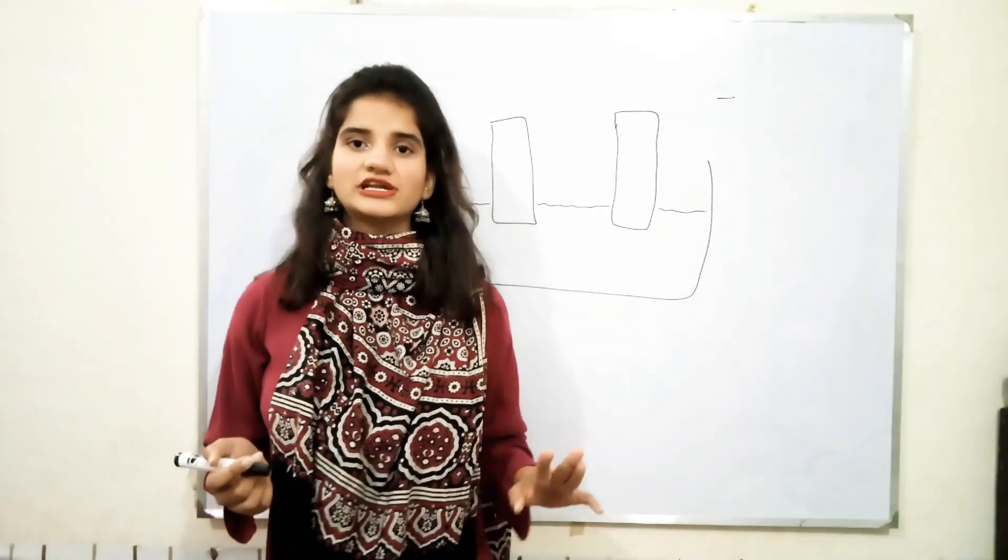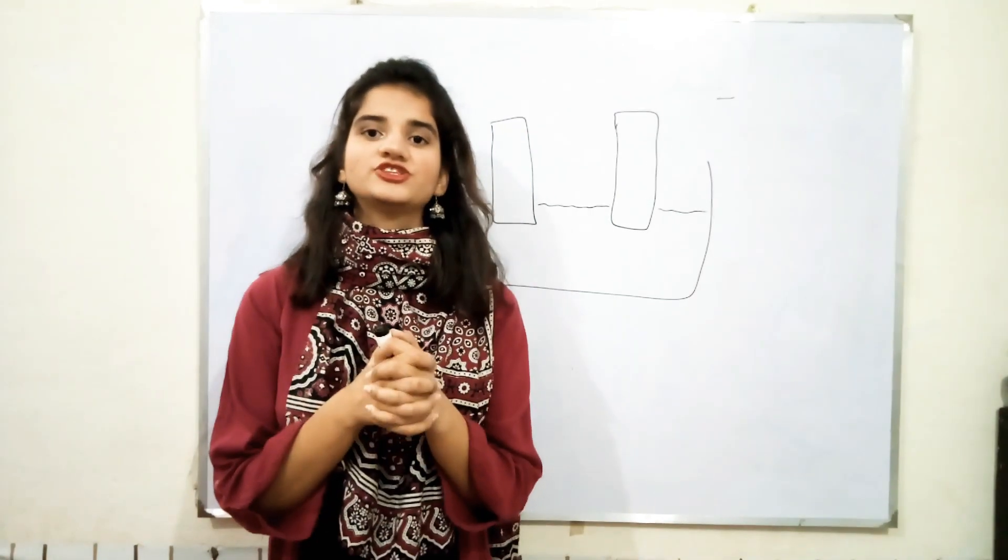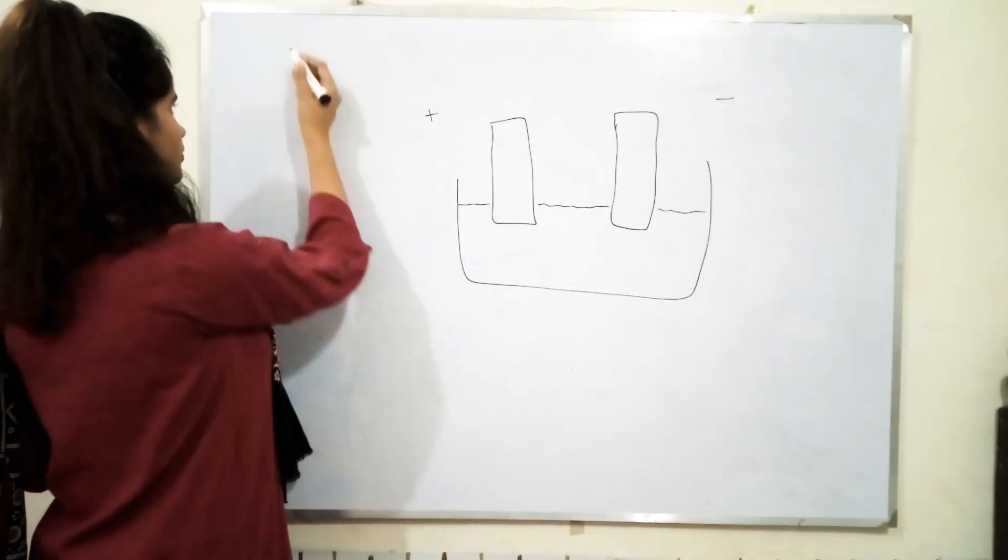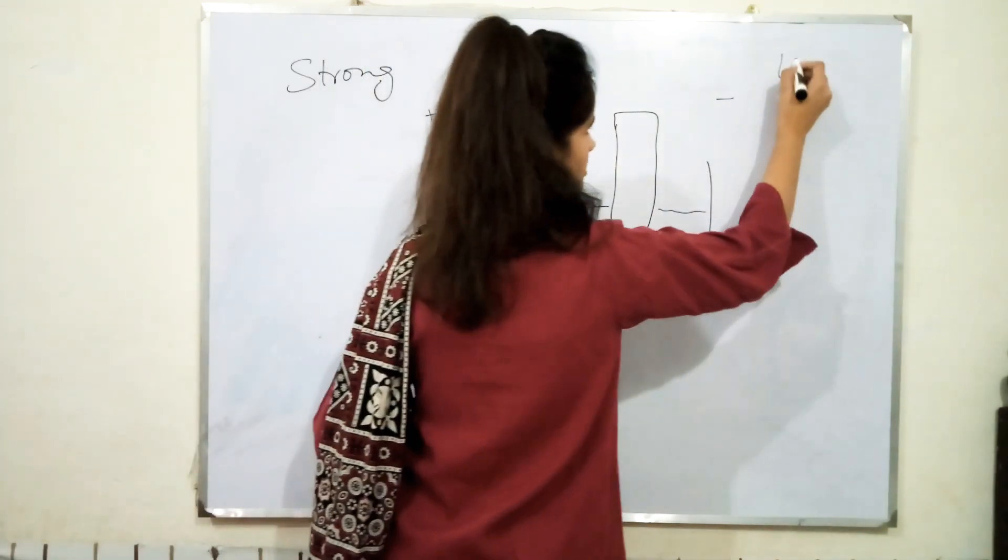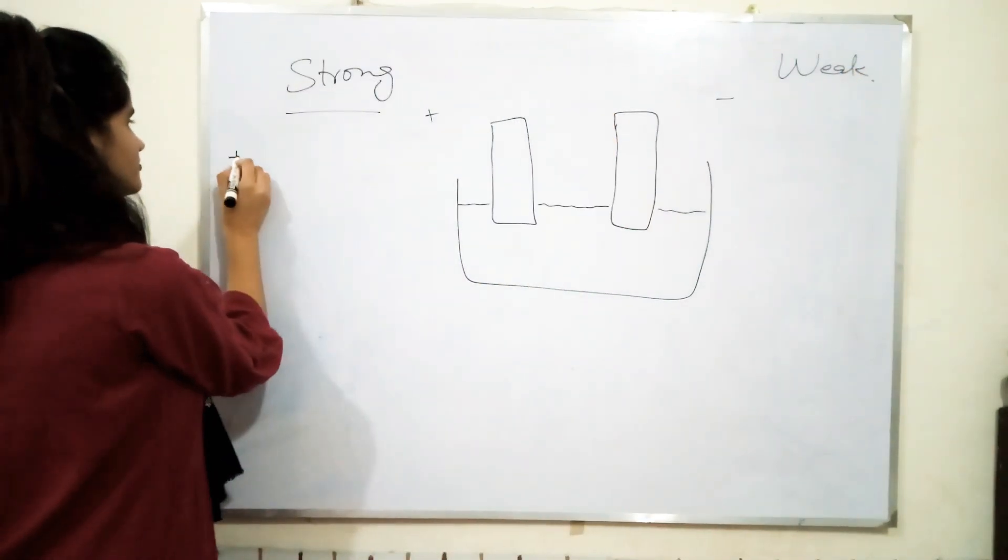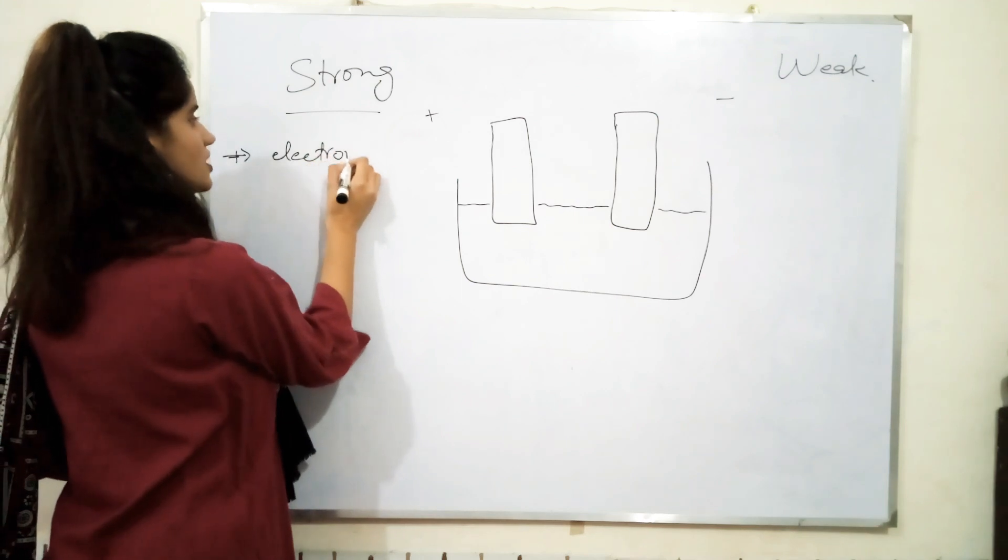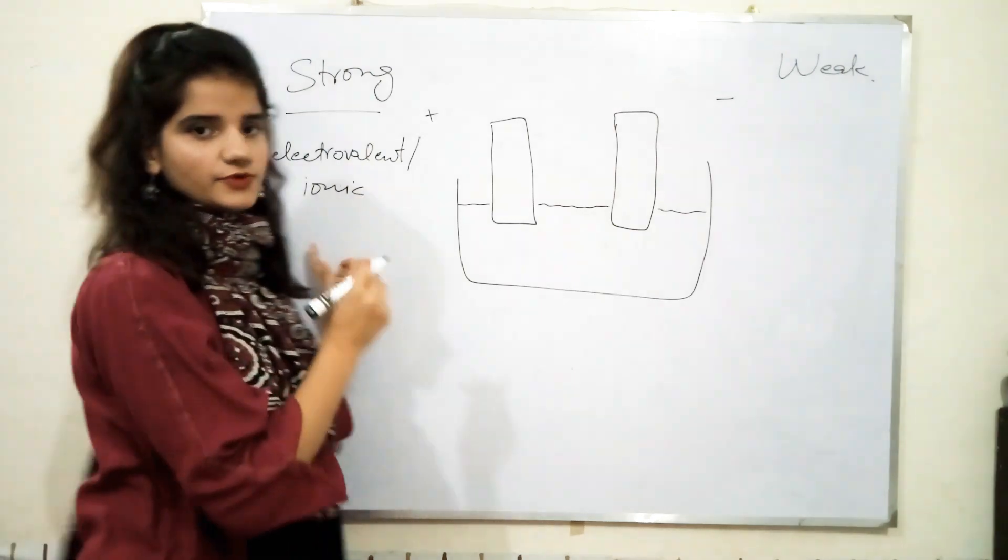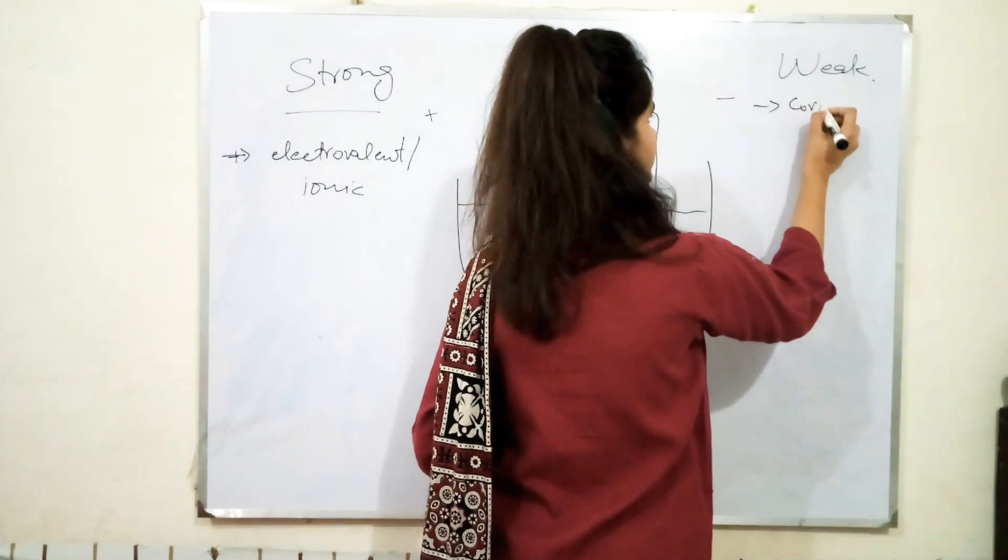Strong electrolytes are those electrolytes in which their molecules are being held together by electrovalent bond. For example, this side is for strong electrolyte and this side is for weak electrolyte. The strong electrolyte would have electrovalent or ionic bonding while the weak electrolyte, it would be having covalent bonding.